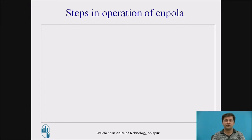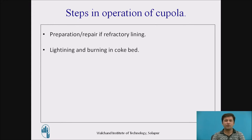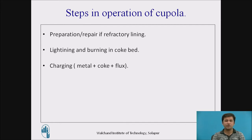Now we will understand the basic steps in the operation of a cupola furnace. The first step is preparation or repair of the refractory lining — if used for the first time it is prepared, or if used continuously it must be repaired over time. The second step is lighting and burning of the coke bed, which initializes the melting. Metal, coke, and flux are placed in alternate layers through the charging door, where they are mixed together to produce molten metal.